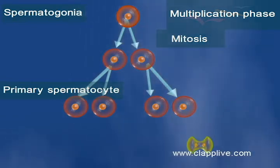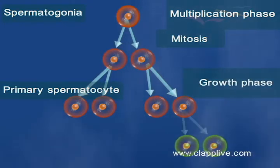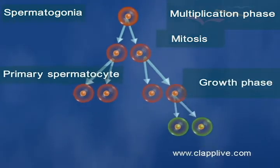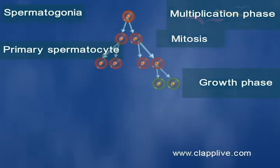The next is the growth phase, in which each diploid primary spermatocyte enlarges and prepares for meiotic division.